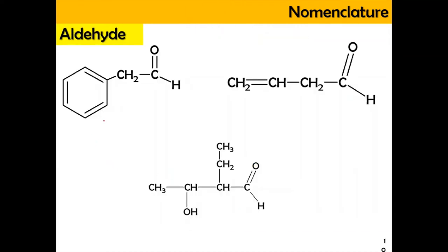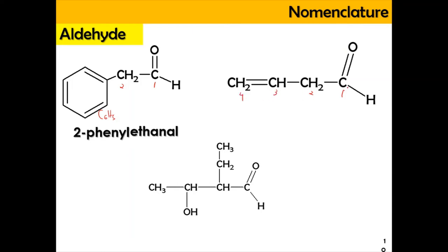Now we're going to do the naming for aldehyde structures. For example, we have a two-carbon chain — carbons 1 and 2 — which refers to ethanal. At carbon number 2, it is attached with a phenyl group (C6H5), so it is going to be 2-phenylethanal. For another structure with four carbons, we know it is butanal, but at carbon number 3 there is a double bond, so it becomes 3-butenal — changing the A to E.